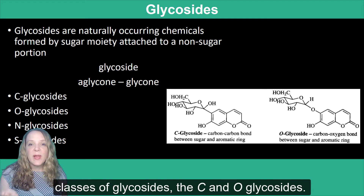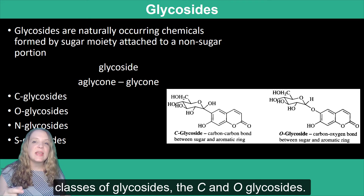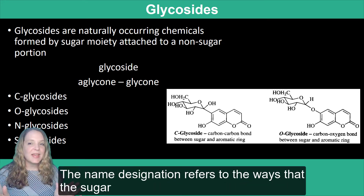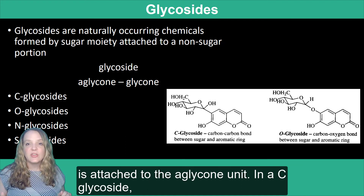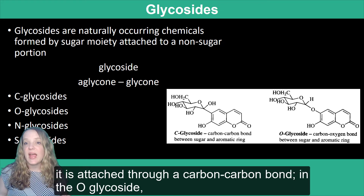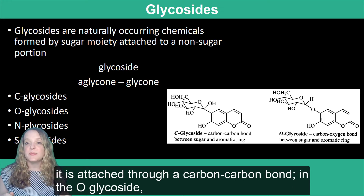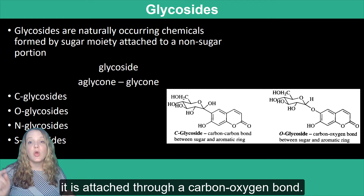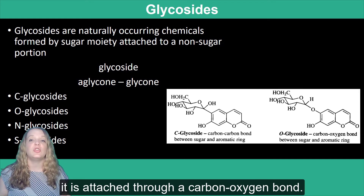There are two basic classes of glycosides: the C and the O glycosides. The name designation refers to the way that the sugar is attached to the aglycone unit. In a C glycoside, it is attached through carbon-carbon bonds. In the O glycoside, it is attached through a carbon-oxygen bond.